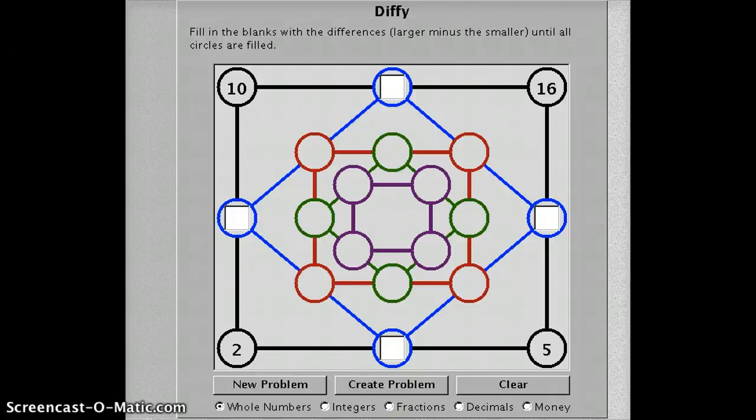My name is Elizabeth Anderson, and the game I chose was called Diffy. It relates to the second grade objective three, which is to estimate, model, illustrate, describe, and solve problems including two and three-digit addition and subtraction.